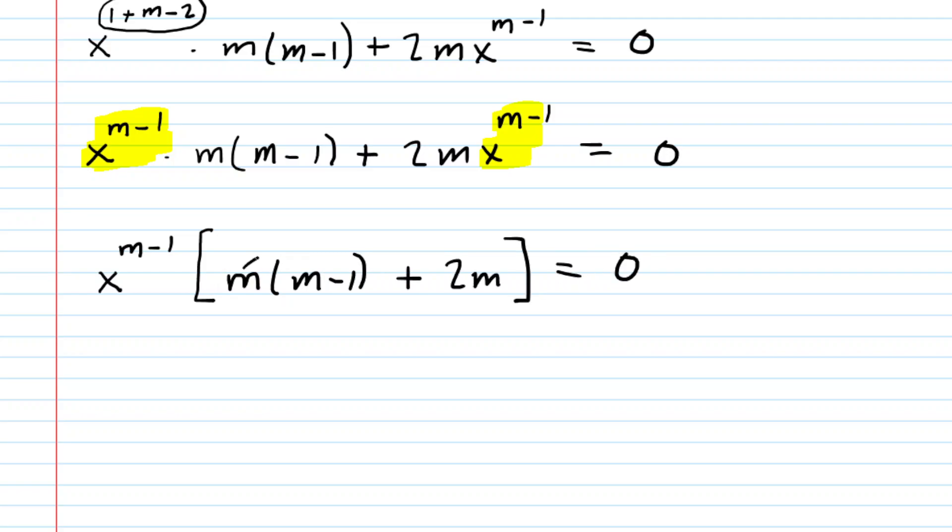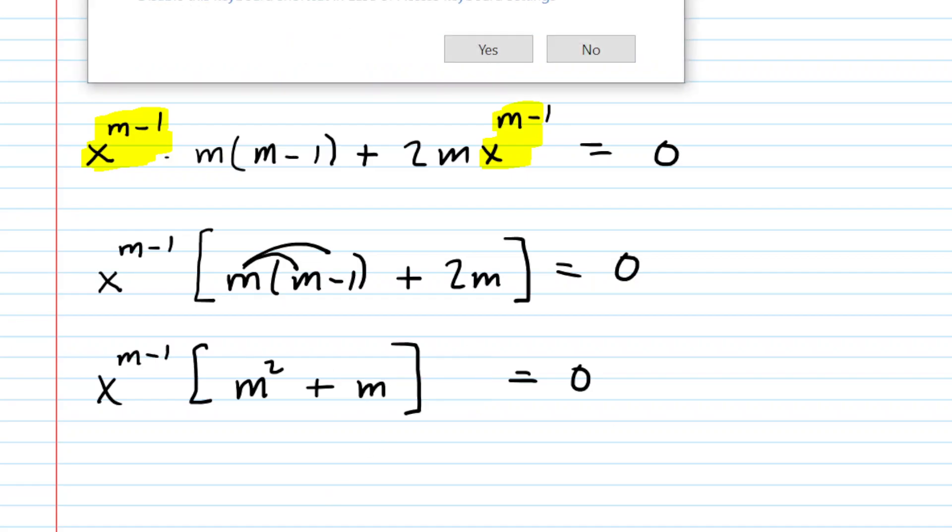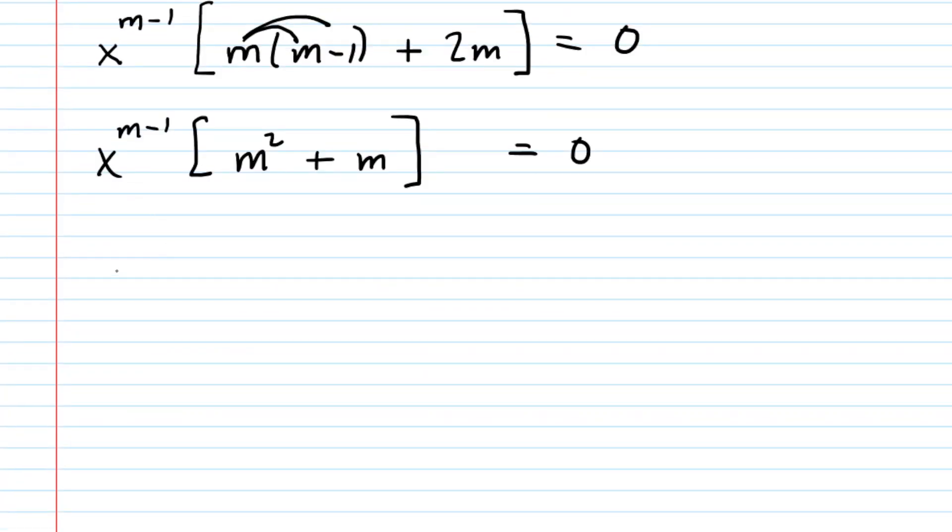Let's simplify a little bit further. We can distribute this m, which gives us m squared minus one m plus two m. We can combine the like terms: minus one m plus two m is plus m. After simplifying, we factor that m squared plus m. So we have x to the m minus one times m times m plus one.